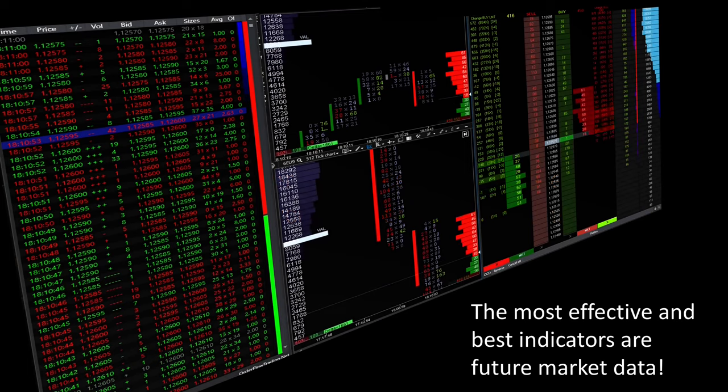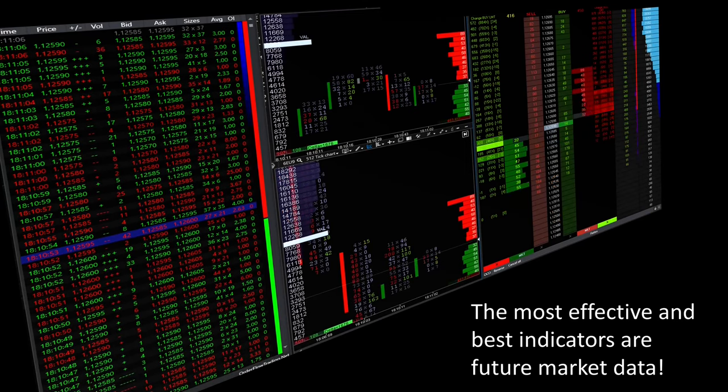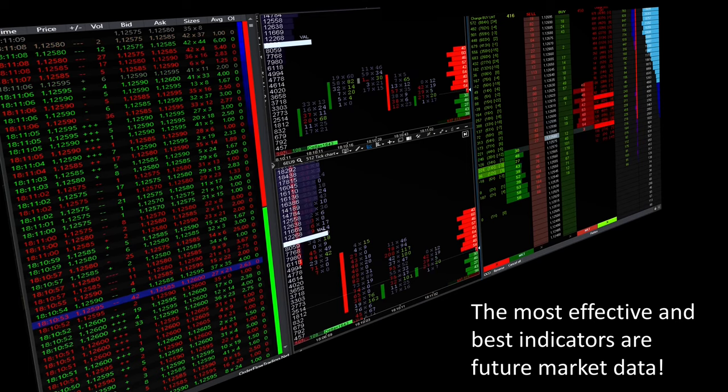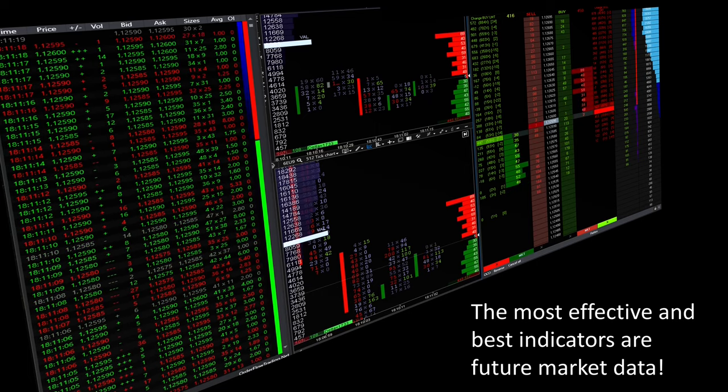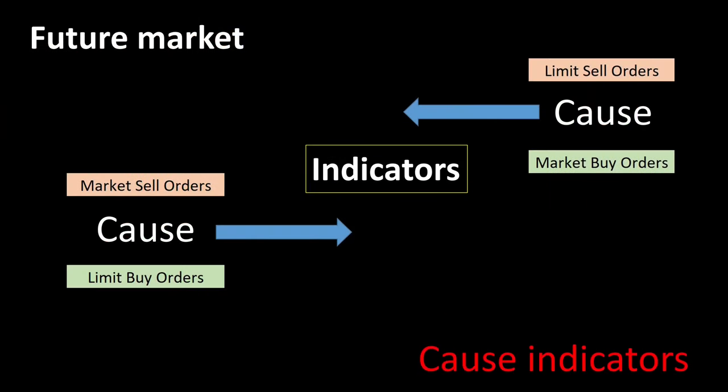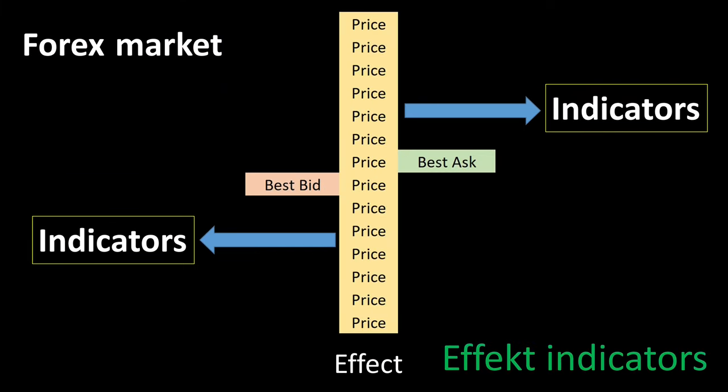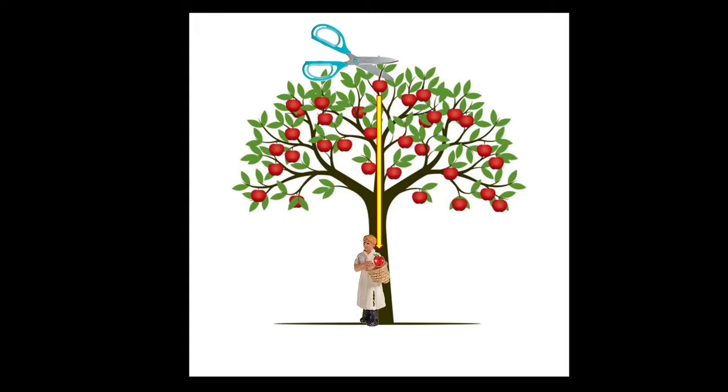First of all, I can give every forex trader the recommendation to take a closer look at the stock market data. Because these are the best indicators worldwide that traders can work with in order to make trading decisions. We have already seen that cause indicators are significantly more efficient than effect indicators, as these only represent the result and you cannot see the actual cause of the price change.